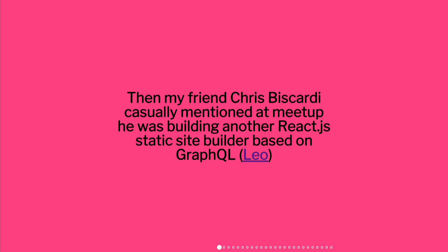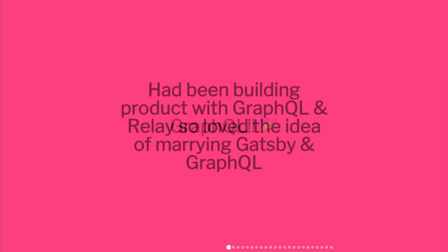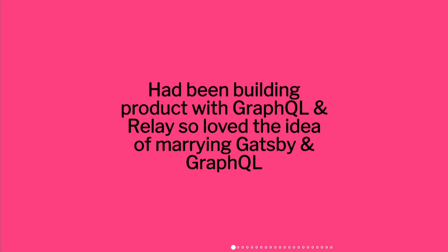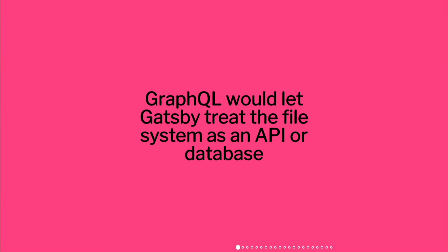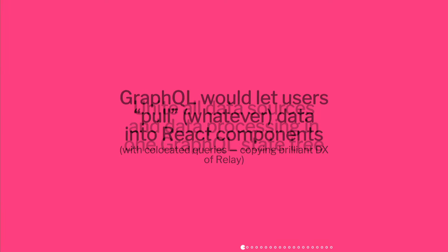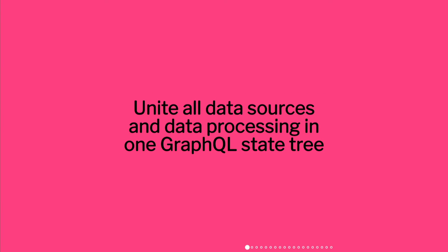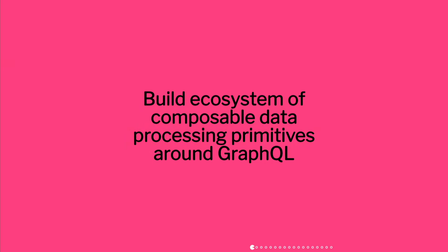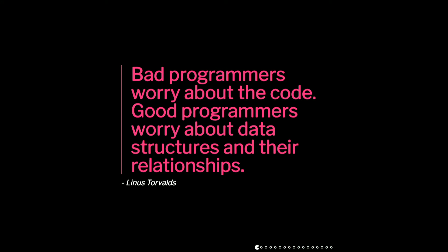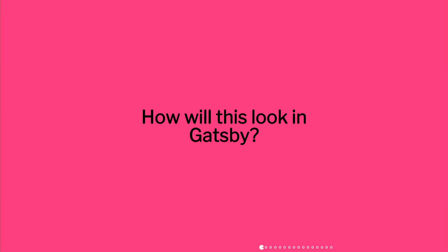Then a friend mentioned he was building a React app generated on GraphQL. And I was like, GraphQL — of course. I'd actually been building something with GraphQL and Relay, so I loved this idea. The file system is kind of like a database. I wanted to pull in data, and all your data sources — whether file system or external sources — would be part of one big GraphQL schema. I really like this quote by Linus: 'Bad programmers worry about code; good programmers worry about data structures and their relationships.' Wanting to be a good programmer, I wanted to focus on data structures. GraphQL lets me do this.